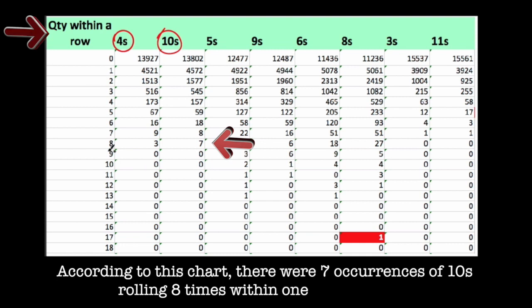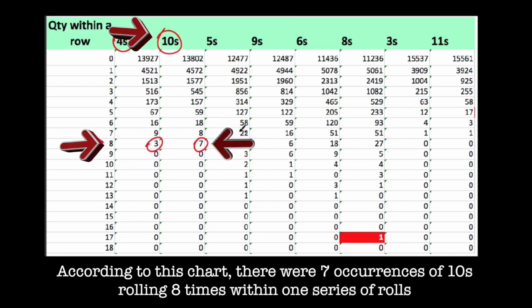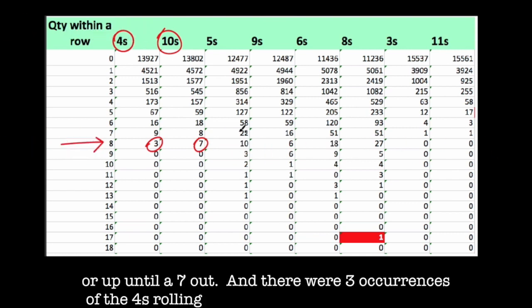According to this chart, there were seven occurrences of tens rolling eight times within one series of rolls, or up until a seven out. And there were three occurrences of fours rolling eight times within one series of rolls.